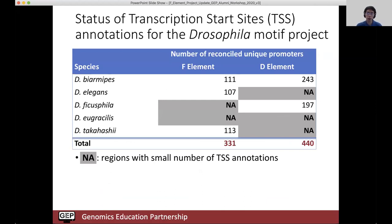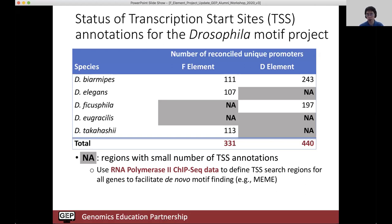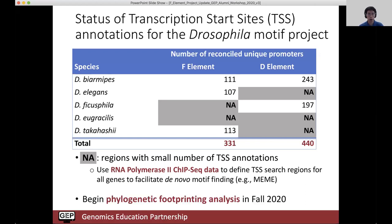Last fall, we had group students help us make more progress on the transcription start site annotations. At this point, this dataset is also frozen, so they're ready for downstream analysis. In total, we have annotations for 331 unique promoters from the F element and 440 promoters from the D element. The ones highlighted as NA have some submissions but not enough for downstream analysis, so we're going to augment that with RNA polymerase 2 data to help define TSS search regions, use that for motif finding and looking for enrichment patterns, and do phylogenetic footprinting analysis with a variety of tools such as MAGMA to identify regulatory motifs.